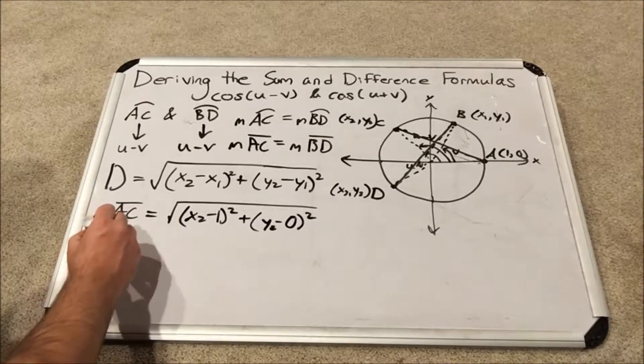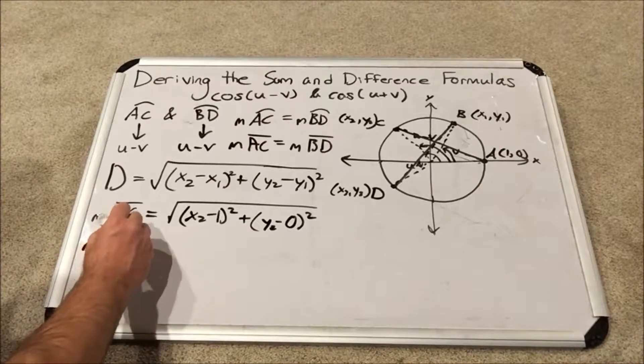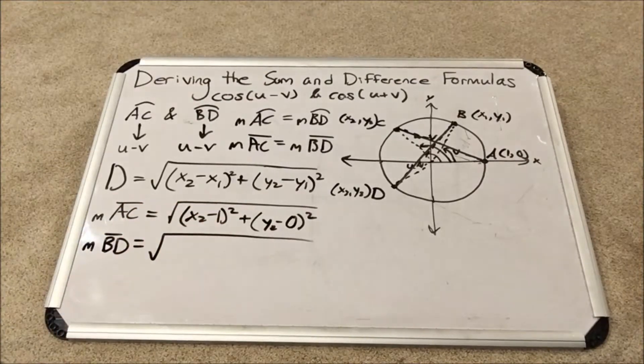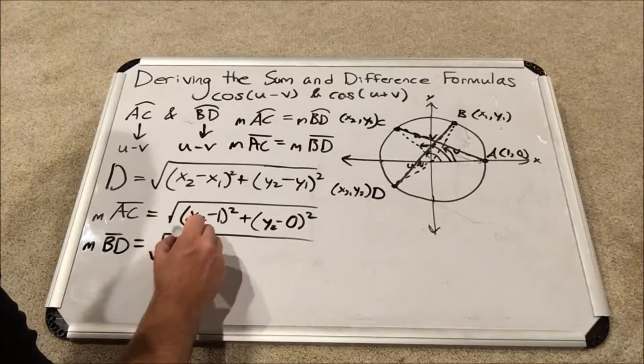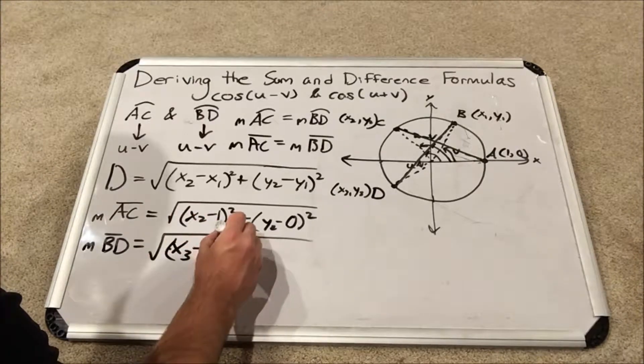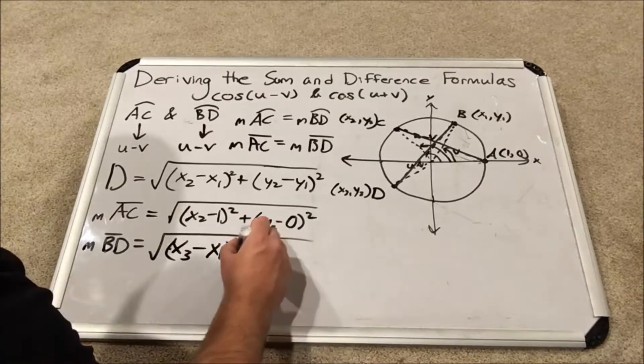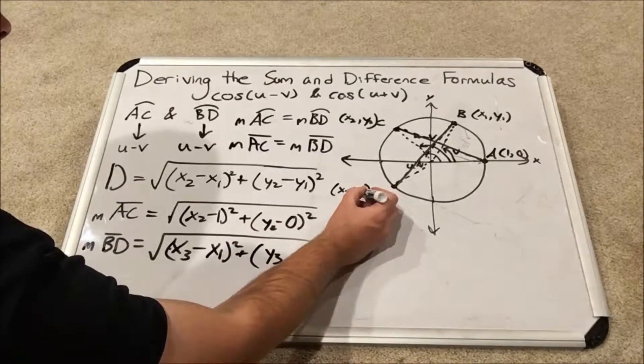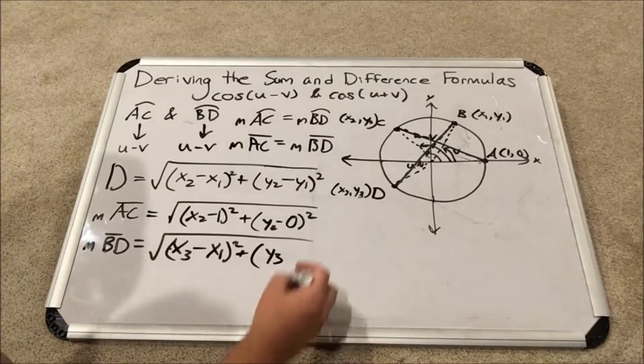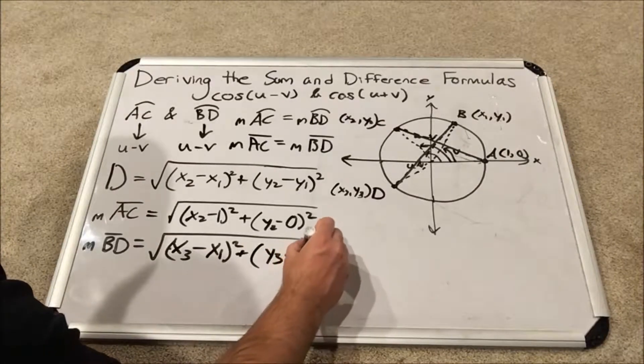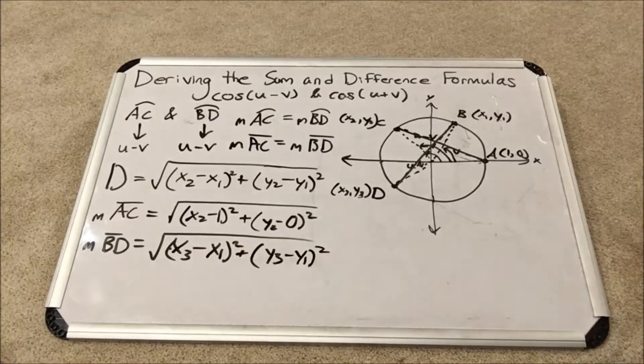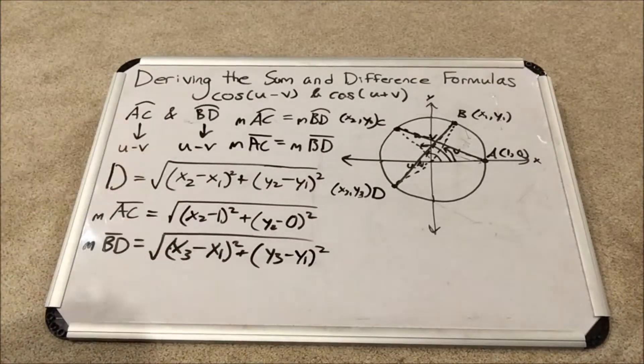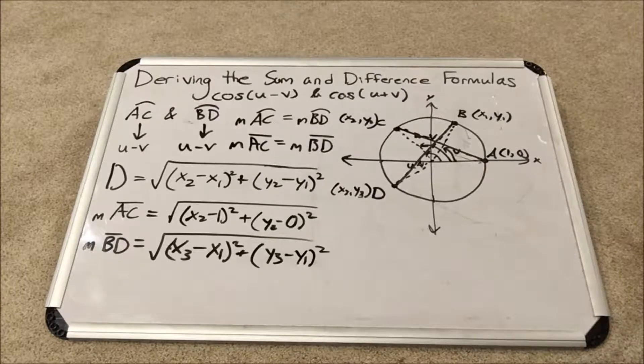Similarly, I have an expression for the measure of chord BD using the same distance formula. This will be x3, I'm treating D as the second point, minus x1 squared plus y3 minus y1 squared. Now here's the thing, these two chords are equal to each other. So these two expressions are equal to each other.